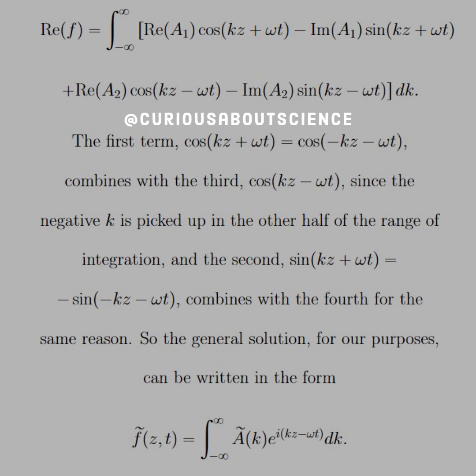And the second, sin(kz+ωt) = -sin(-kz-ωt), combines with the fourth for the same reason. So the double negatives cancel due to being odd. So the general solution for our purposes can be written in the form f̃(z,t) = integral from -∞ to ∞ of Ã(k)e^(i(kz-ωt))dk. This is all thanks to the complex notation and complex exponential.